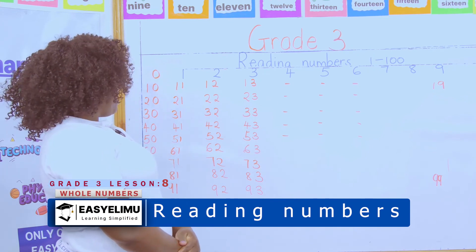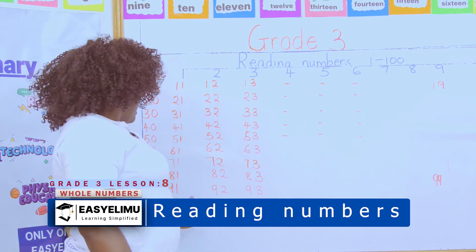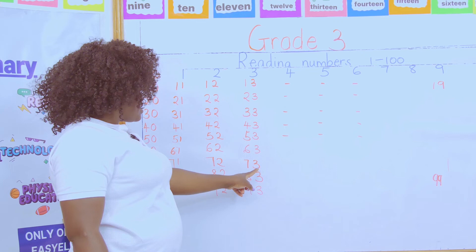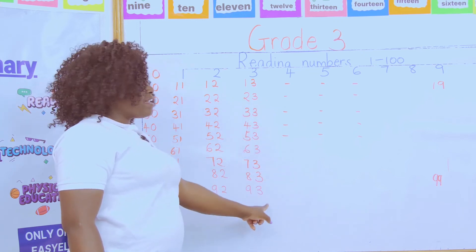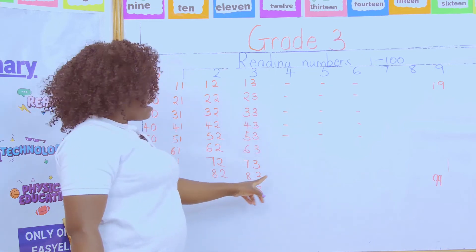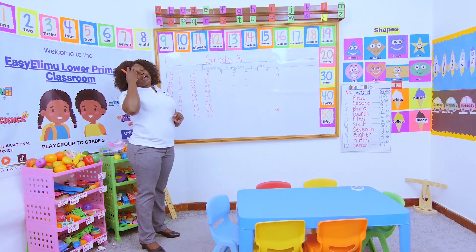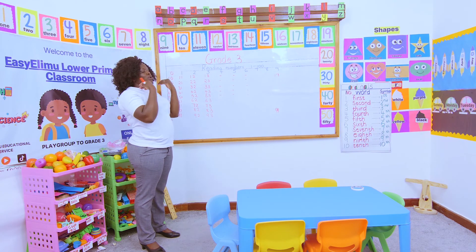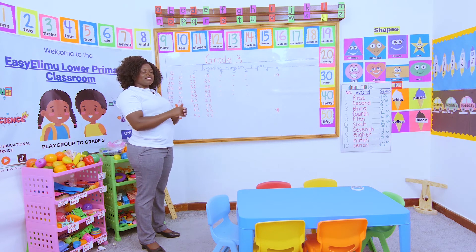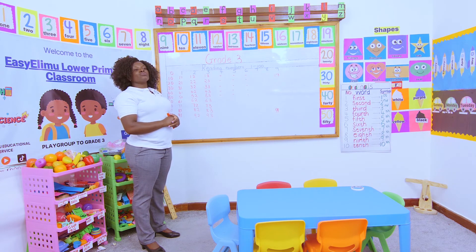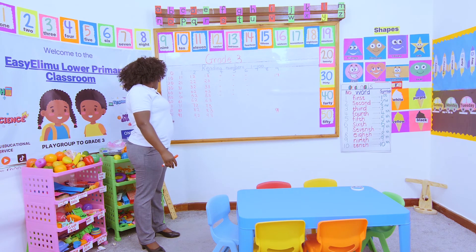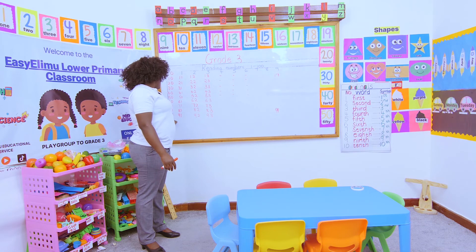Teacher, that is very easy — you've given us a trick on how to write the numbers! Even if you skip a number, you'll realize it because a 2 cannot fit where 3s are, a 4 cannot fit where 3s are. And this works even up to one thousand, two hundred — the same rule applies. The main numbers are the tens up to ninety.